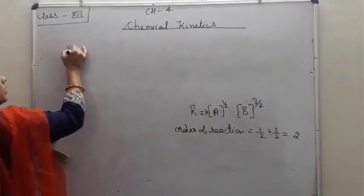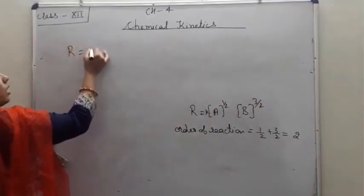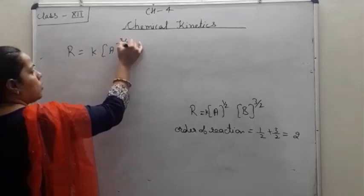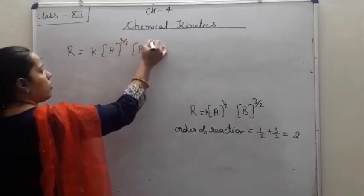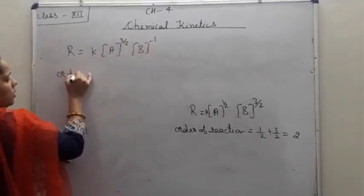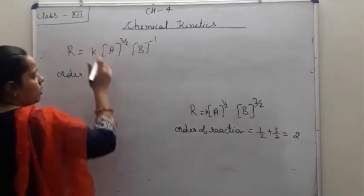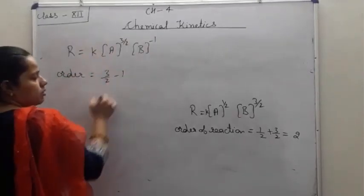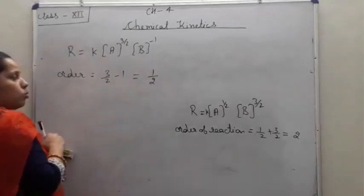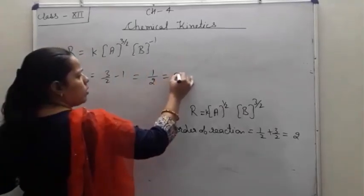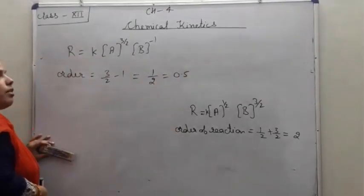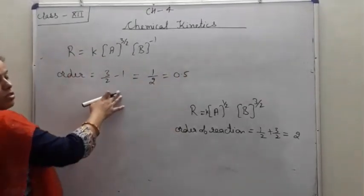Here is another example. Given the rate law with power of A = 3/2 and power of B = -1, the order of this reaction = 3/2 + (-1) = 1/2 = 0.5. So this is a fractional order reaction. After zero order, first order, second order, third order — some reactions are called fractional order reactions.